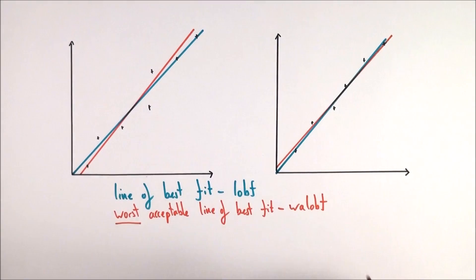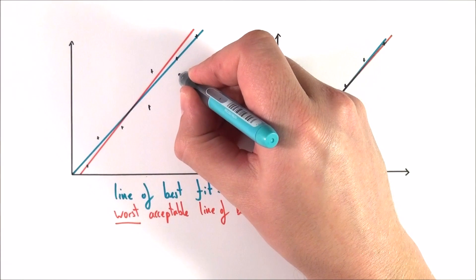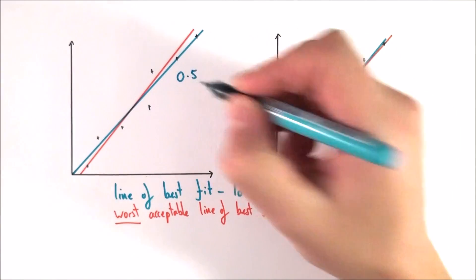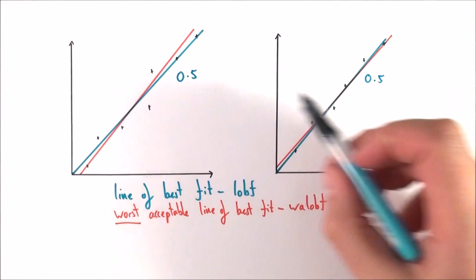Now basically what we can do is we can look at the gradient for both of these lines. So perhaps over here we find that the gradient of the line of best fit is perhaps 0.5, and again it's 0.5 over here, so we have the same number.